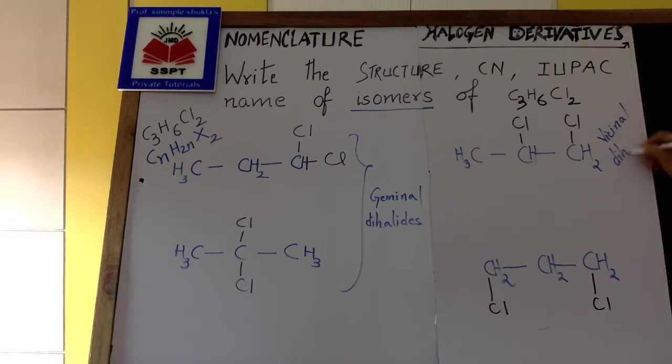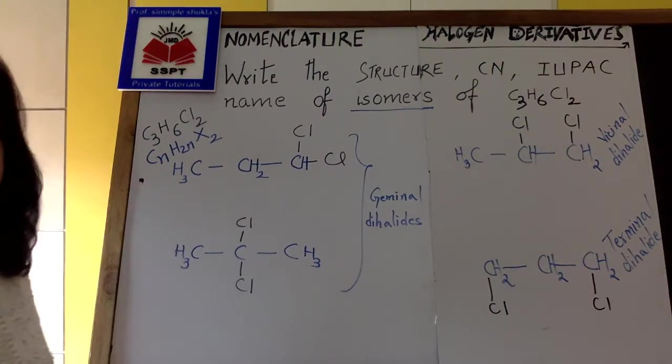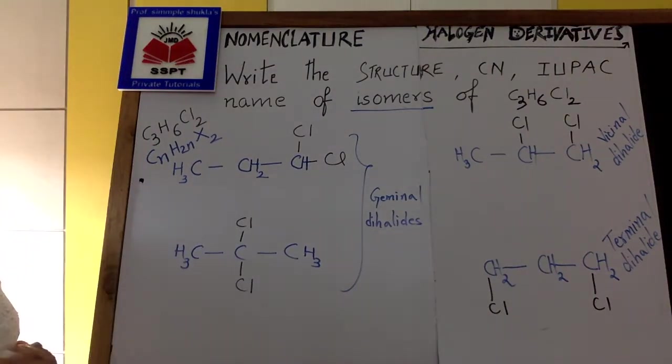It is a vicinal dihalide. The structure is having two halogen at the ends. It is a terminal dihalide. Yes or no? It is a terminal dihalide. So with C3H6Cl2, I could make four structures.